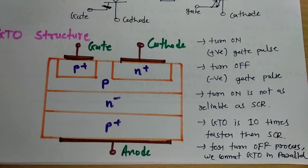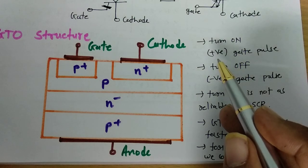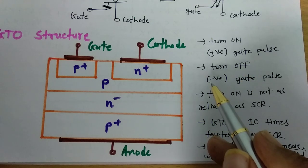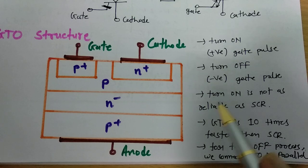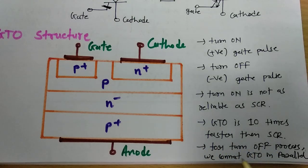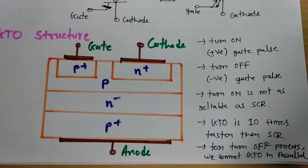To summarize GTO's operation: turning on is done by a positive gate pulse, turning off is done by a negative gate pulse. Turning on of GTO is not as reliable as SCR. GTO is 10 times faster than SCR. And to assist with the turn-off process, we connect GTOs in parallel — these are the basic points when using GTO in any power electronic circuit.